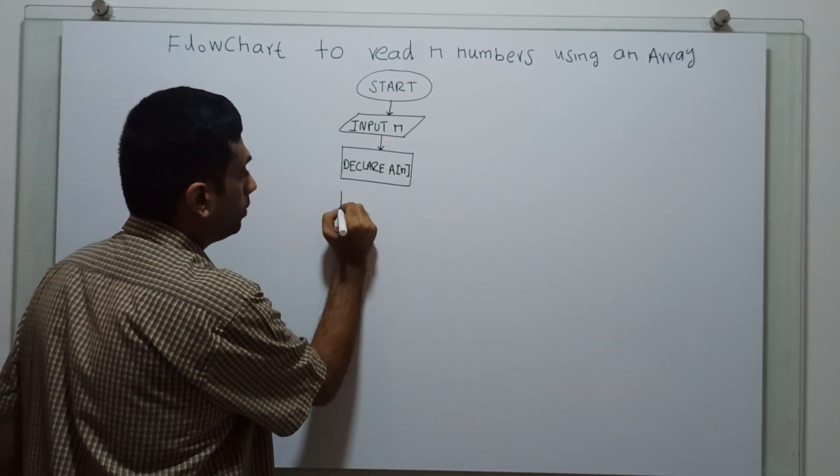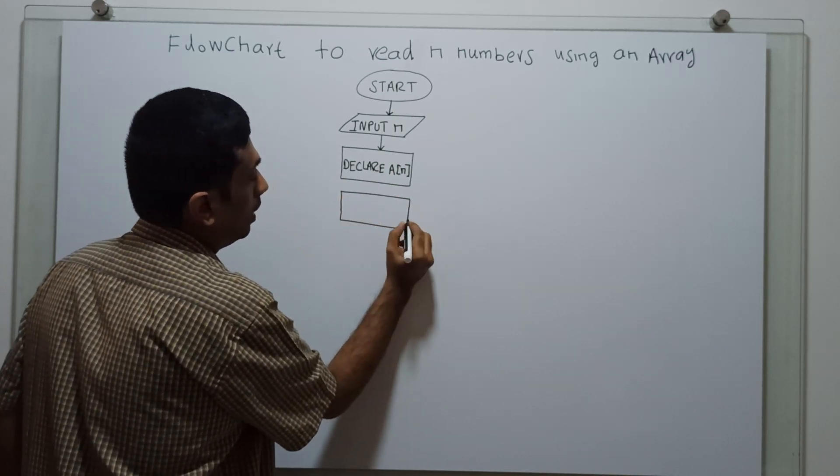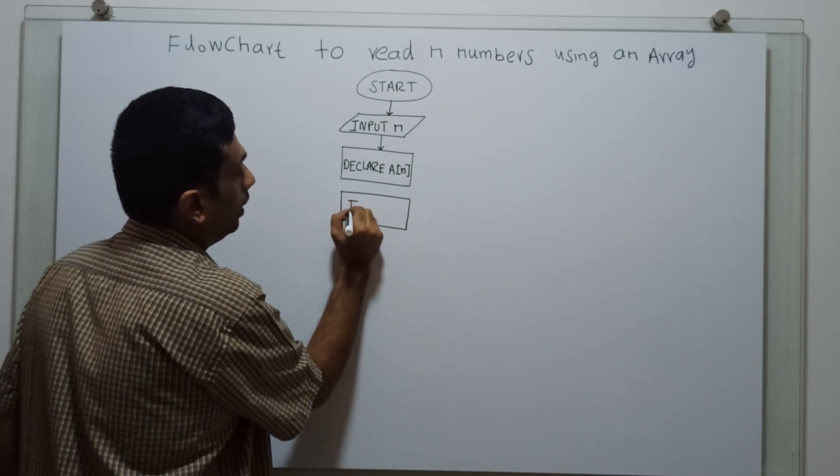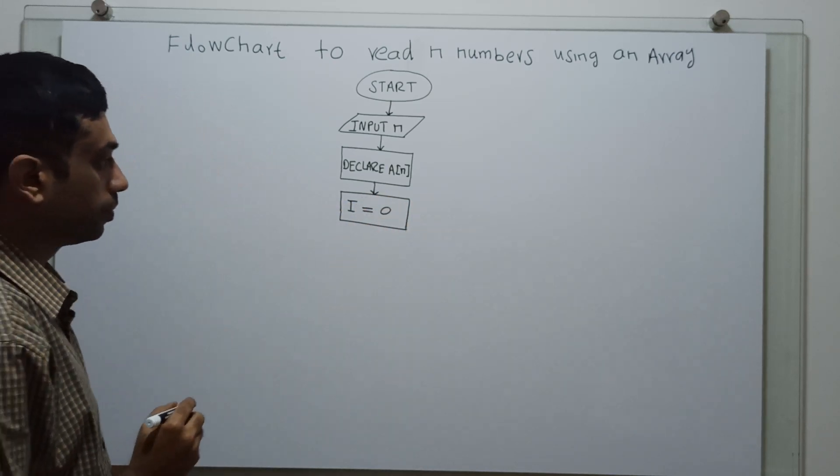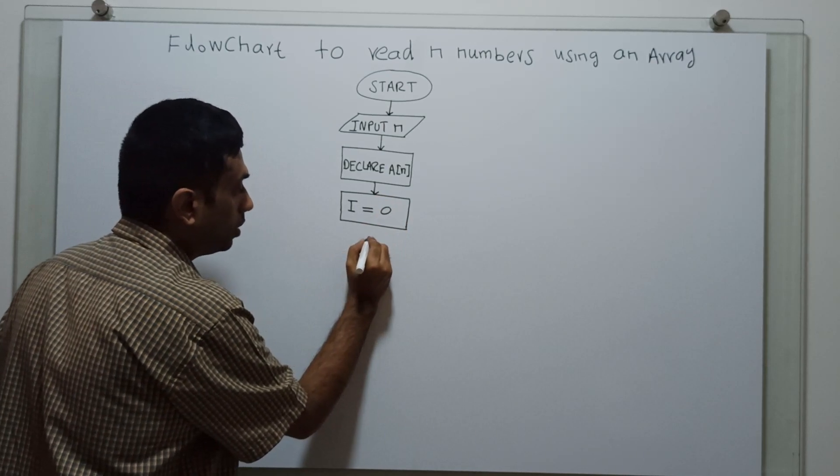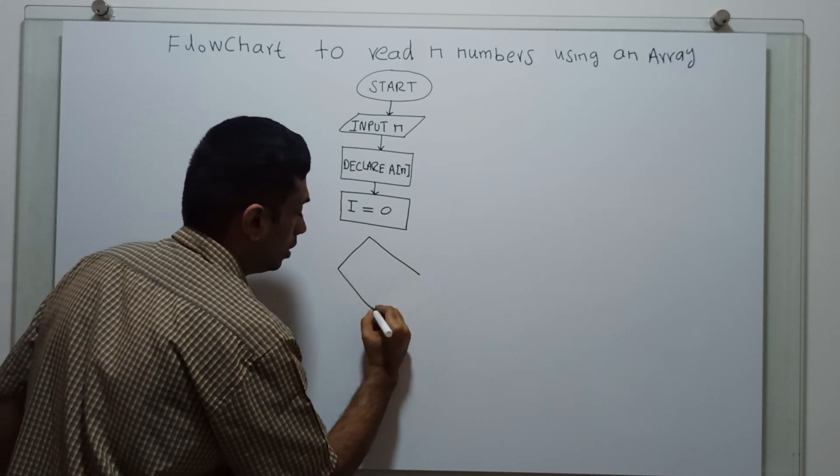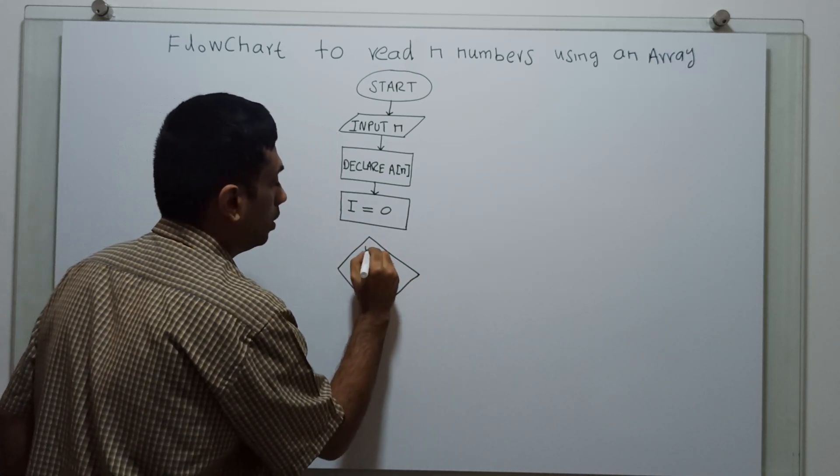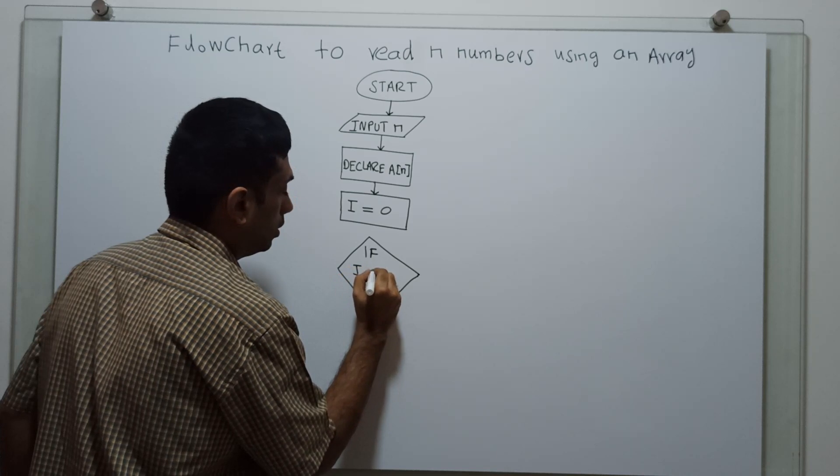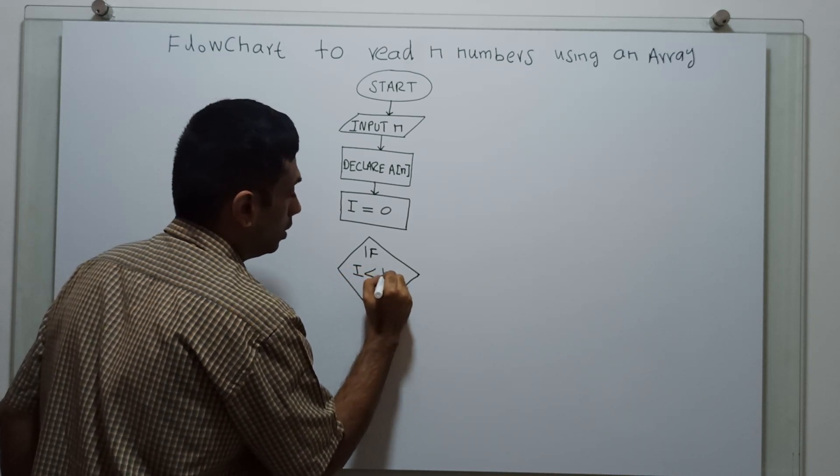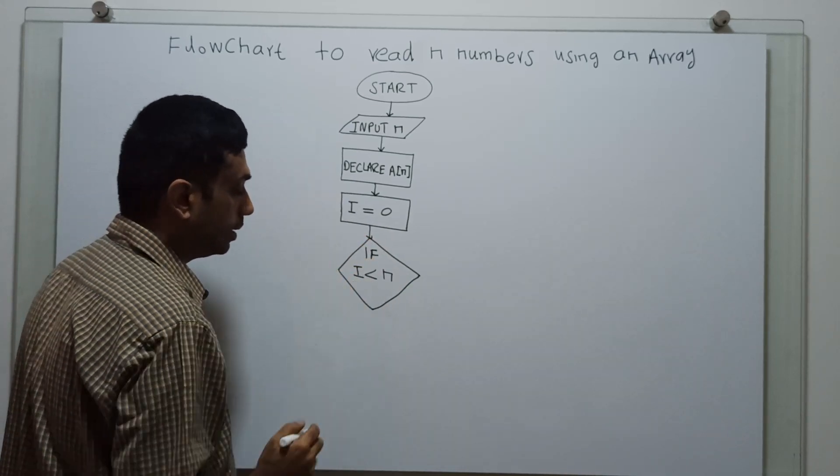Next, I am introducing i equal to 0. A variable i equal to 0. Next, I am checking a condition. If i less than n. So, I am checking if i less than n.